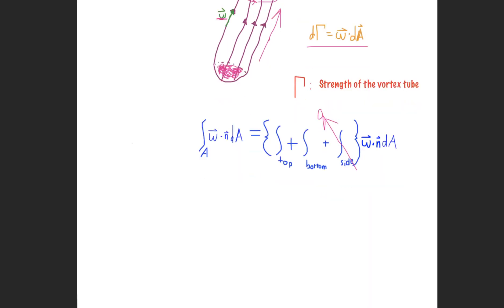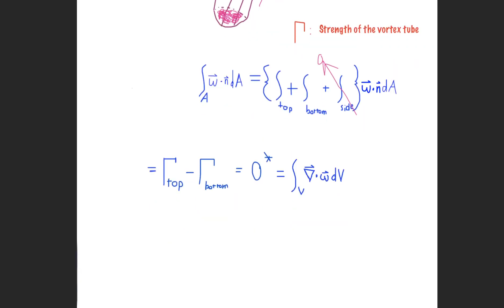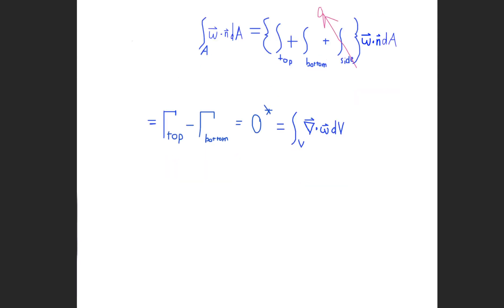Now what we're left with are the top and bottom components, which turn out to be equal and opposite of one another. And so what we can say is that these components equals zero. And the reason that we can say that they equal zero is from Gauss's theorem. From Gauss's theorem, we know that a surface integral like this one is equivalent to the volume integral of the divergence of the vorticity.